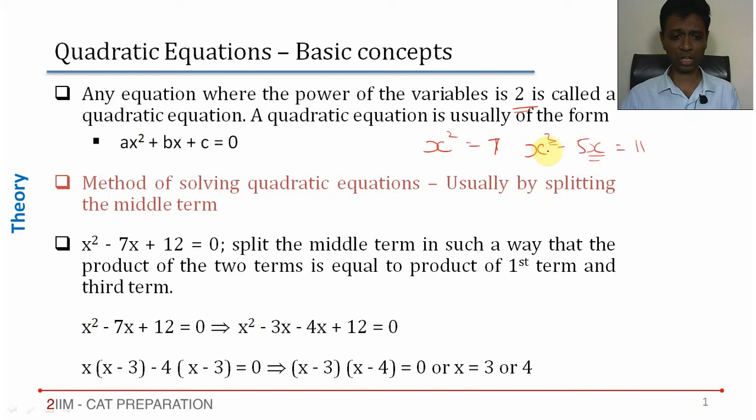How do we solve quadratic equations? This is based on the idea called splitting the middle term. We will deal with the idea, then we will later go to why the idea works. When the equation is like this: x² - 7x + 12 = 0, how do we solve this?